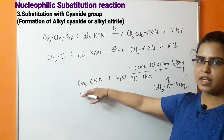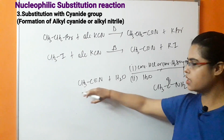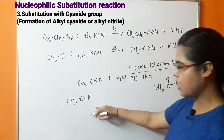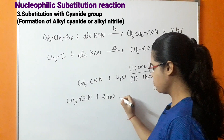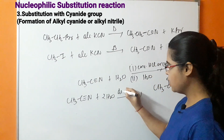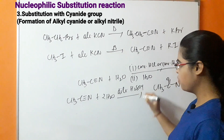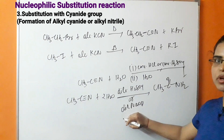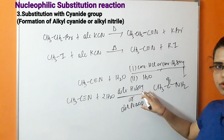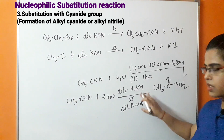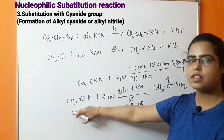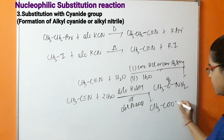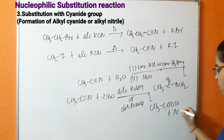Using ethane nitrile, we can also prepare ethanoic acid. This reaction takes place when ethane nitrile is reacted with H₂O in the presence of dilute H₂SO₄ or dilute NaOH — performing either acidic hydrolysis using dilute H₂SO₄ or base hydrolysis using dilute NaOH. This gives the formation of acetic acid and removal of ammonia.